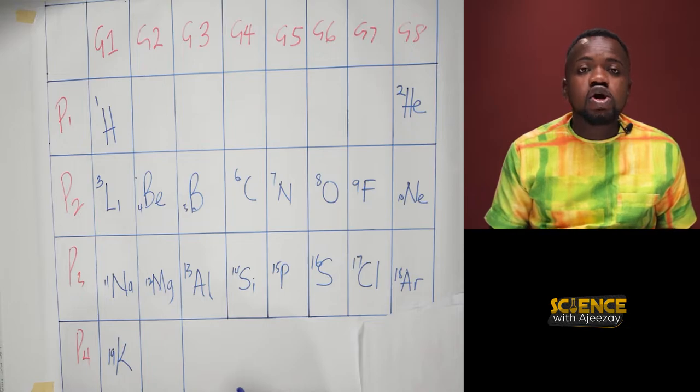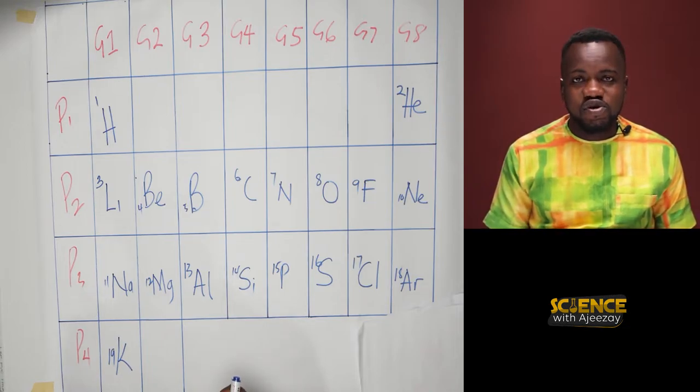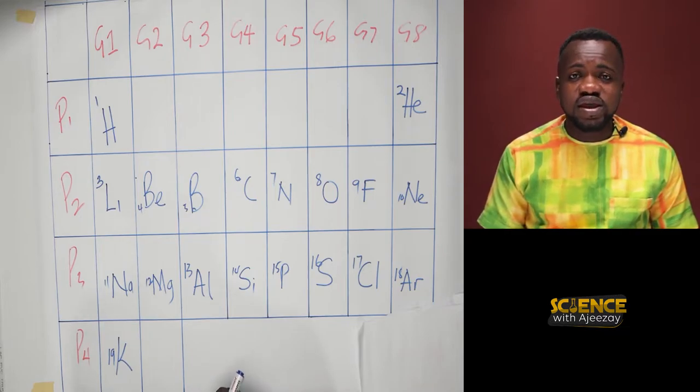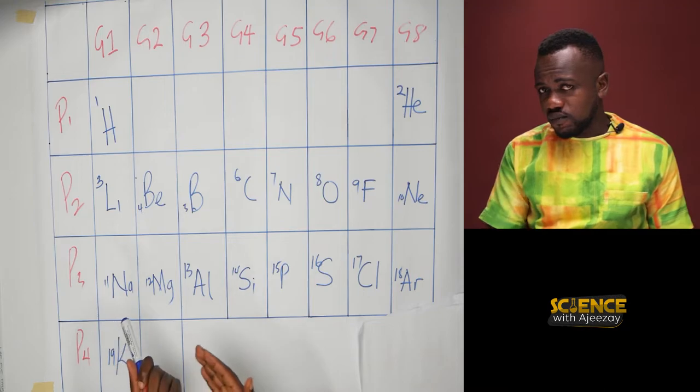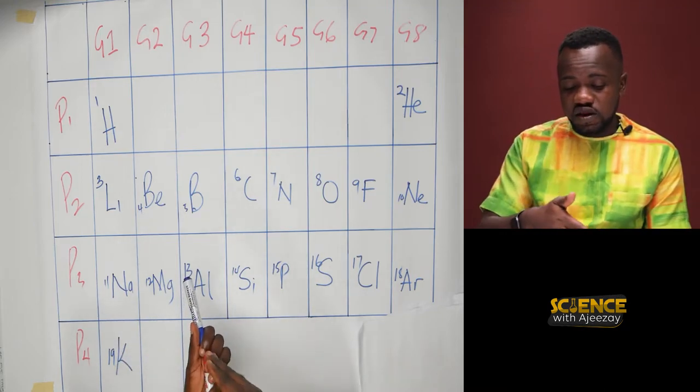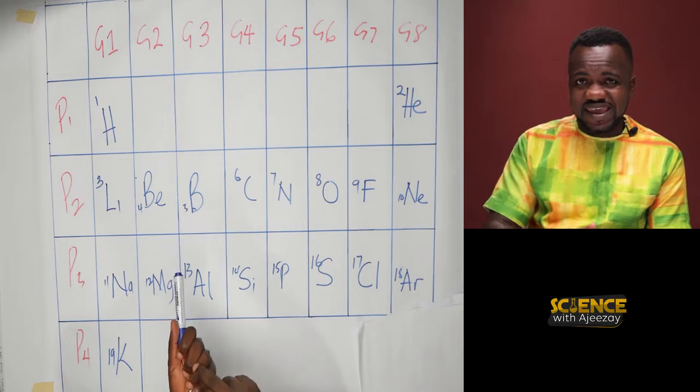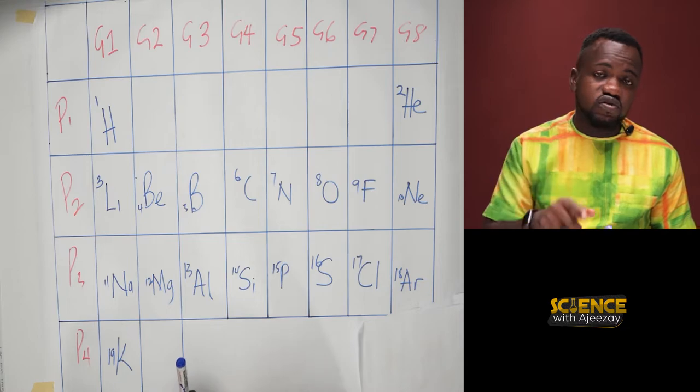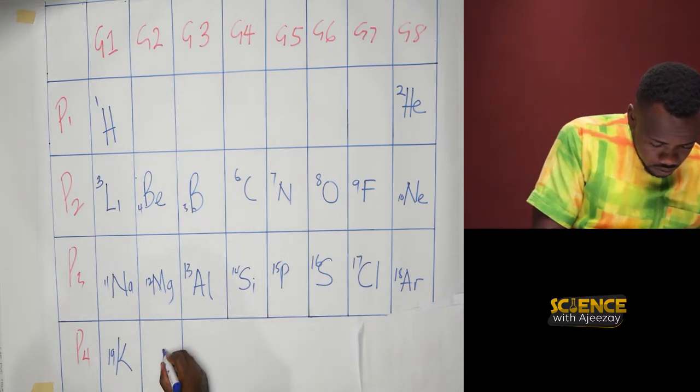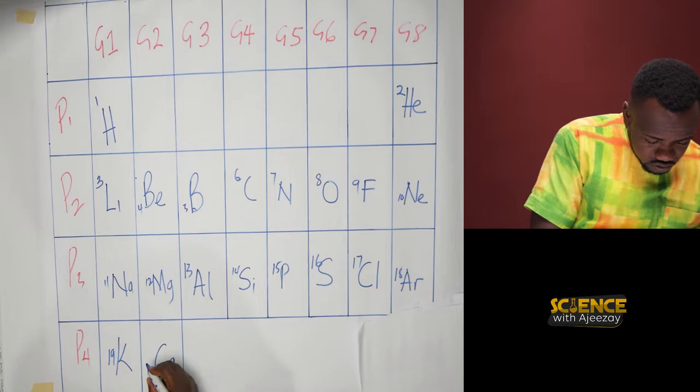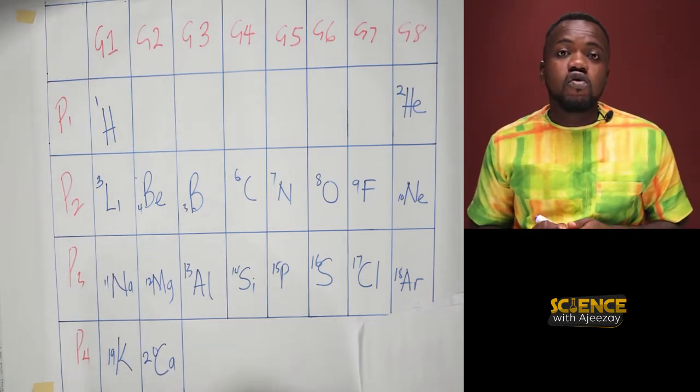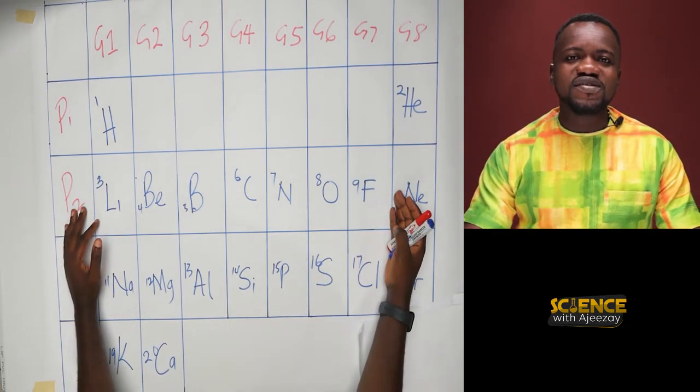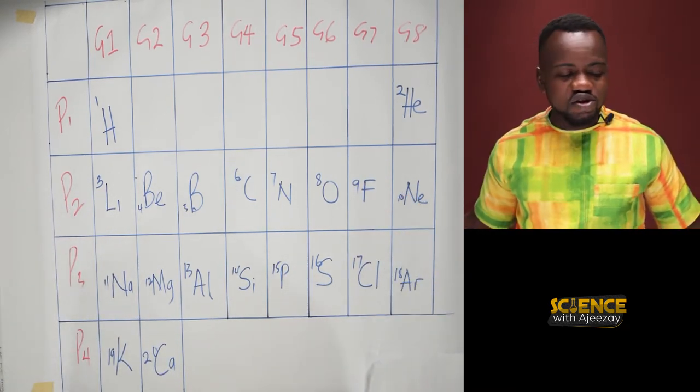The last element is calcium. Calcium has the atomic number of 20. So it is 2, 8, 8, 2. Four shells like 1st, 2nd, 3rd, 4th. So group 2. Calcium is here - 20, period 4. So this is the periodic table representation for our first 20 elements.